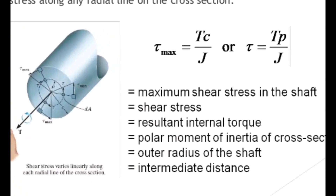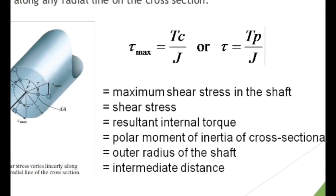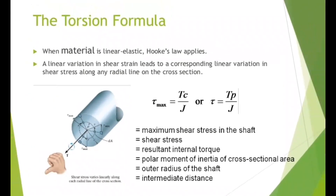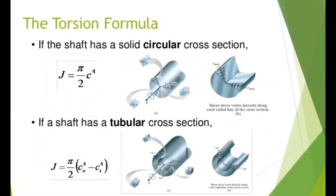Here, t is the resultant internal torque and j is the polar moment of inertia of the cross-sectional area. For a solid circular cross section: j = (pi/2) * c^4. For a tubular cross section: j = (pi/2) * (c_o^4 - c_i^4), where c_o is the outer diameter and c_i is the inner diameter.